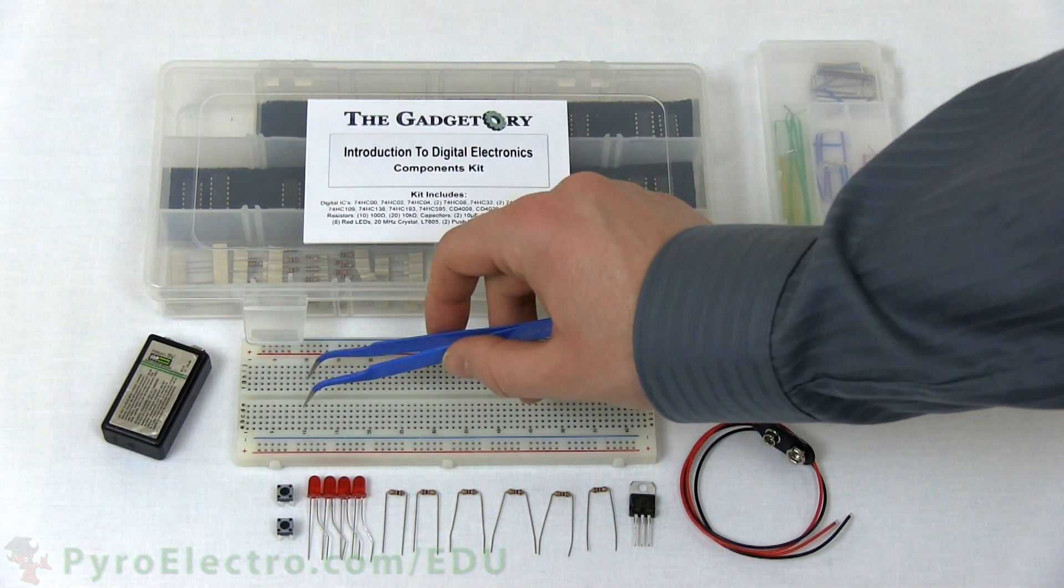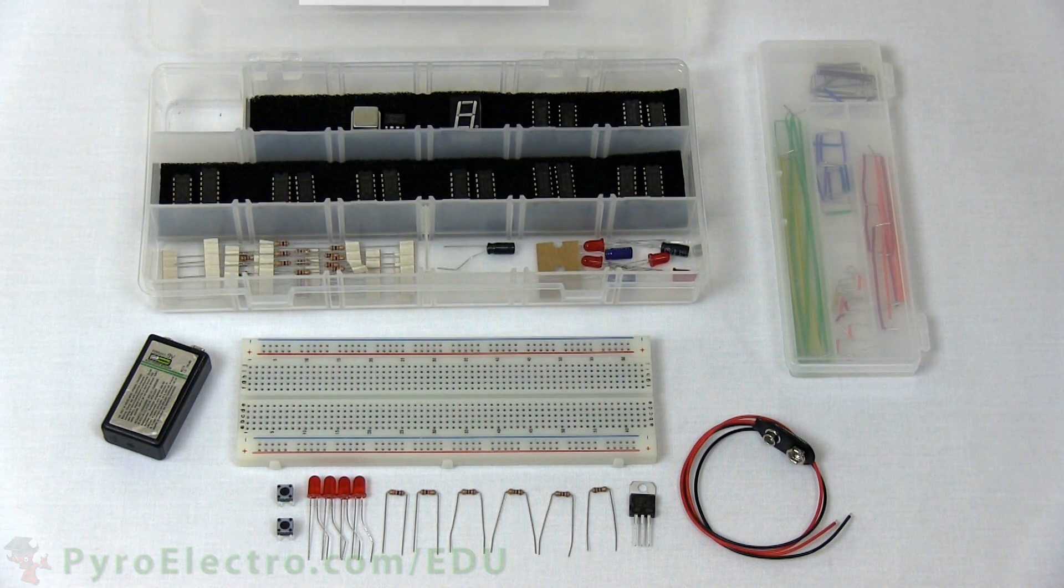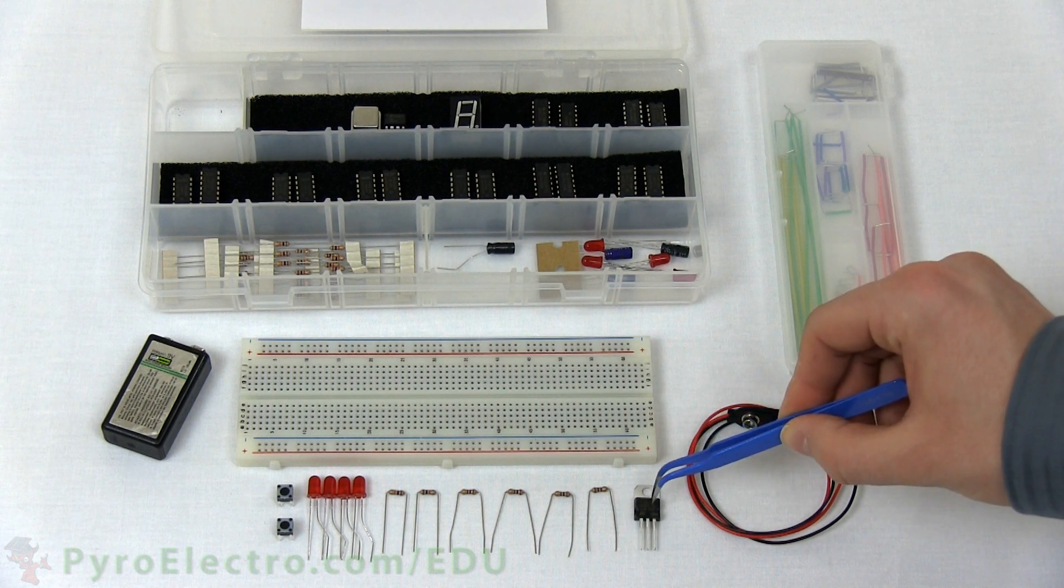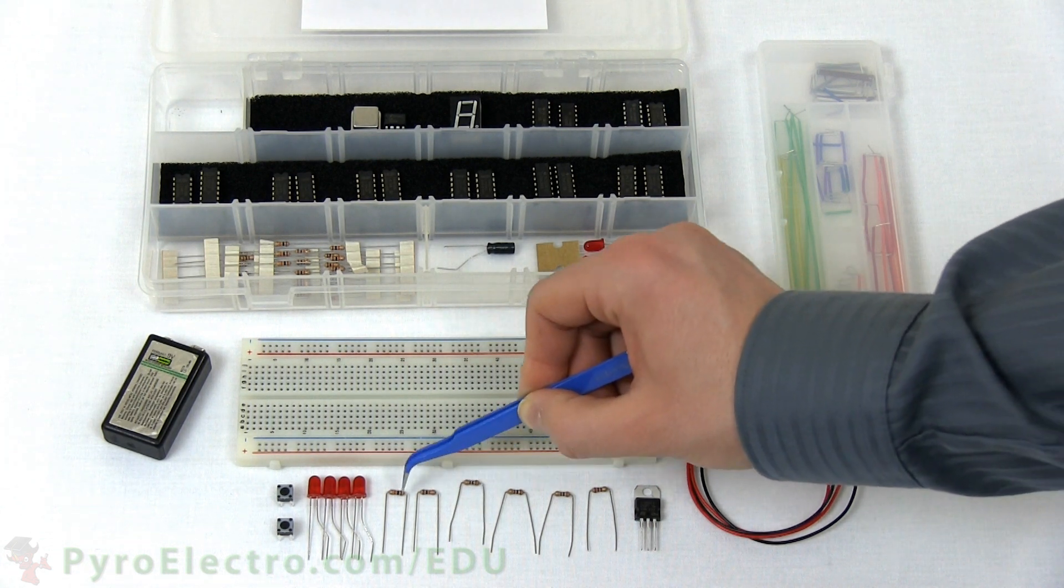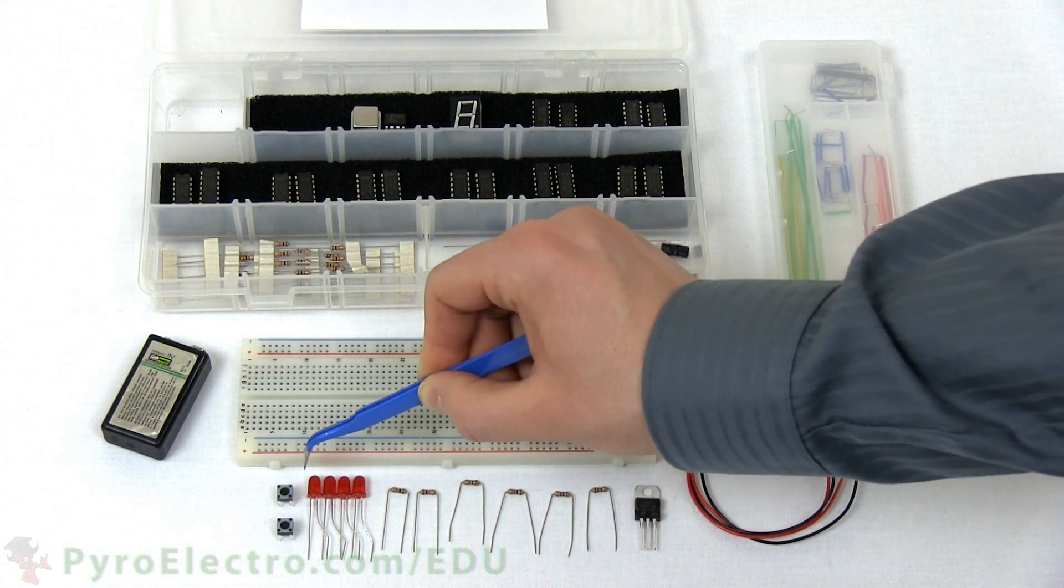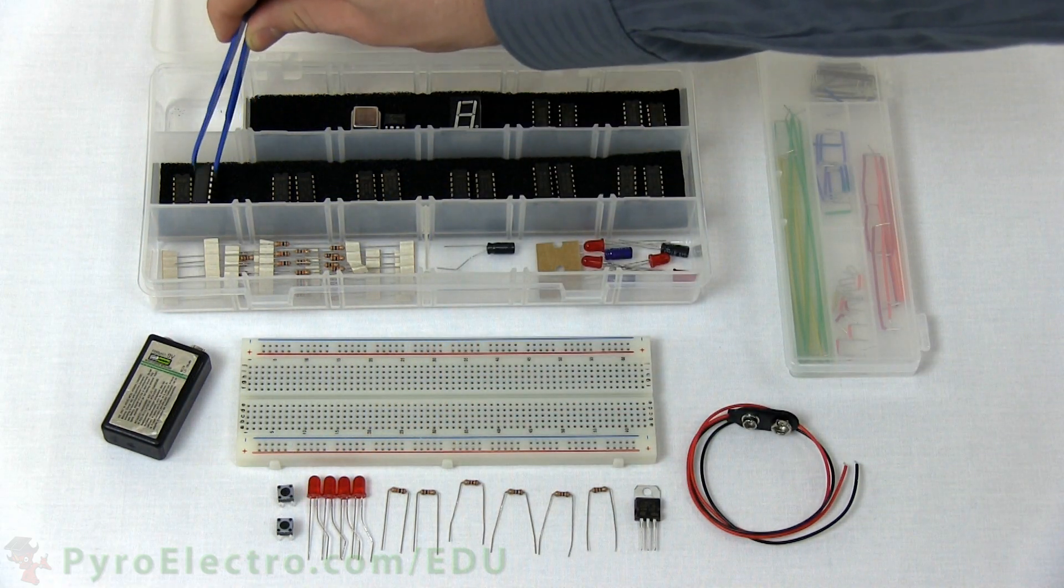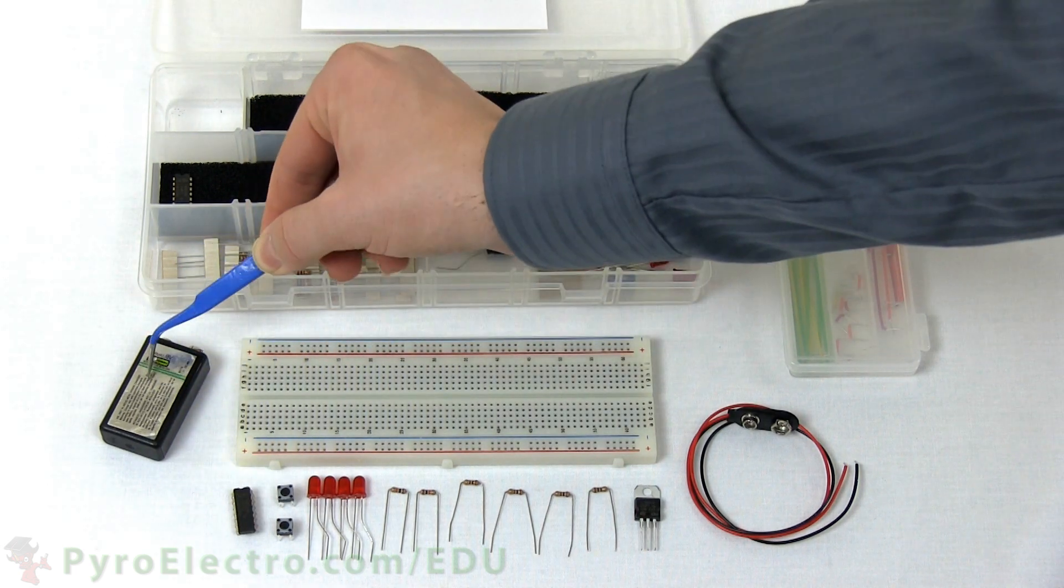we'll need a 9-volt battery connector, 7805 5-volt regulator, four 100-ohm resistors, two 10-kiloohm resistors, four red LEDs, two push buttons, a 74HC02, and a 9-volt battery.